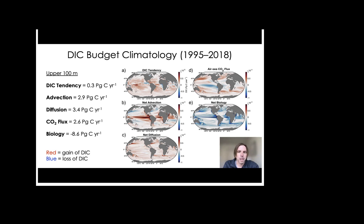Net diffusion, which is shown in panel C, generally provides a gain of DIC in the global ocean. This term is most vigorous in Western boundary current hotspots, where there is a lot of vertical mixing.